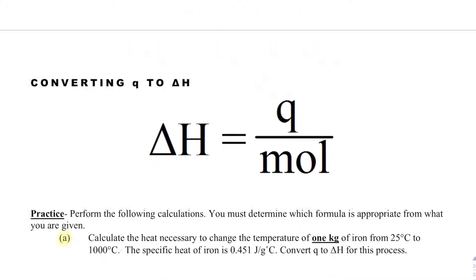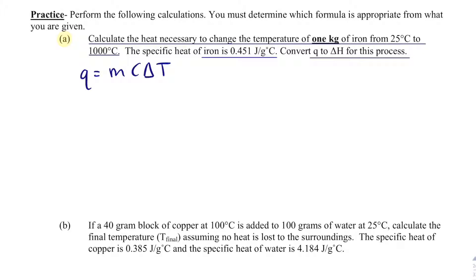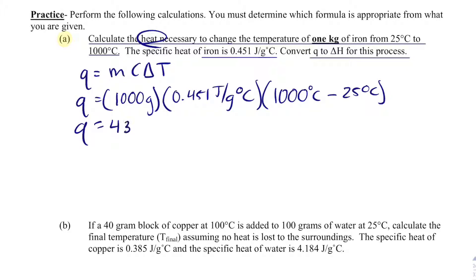For the final problem, calculate the heat needed to change 1 kilogram of iron from 25°C to 1,000°C. The specific heat of iron is 0.451 joules per gram degrees Celsius. Converting 1 kg to 1,000 grams: Q = 1,000 × 0.451 × (1,000 − 25) = 439,725 joules.